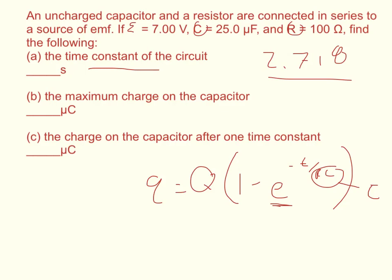100 times 25 times 10 to the negative sixth is equal to 0.0025, and the units on the time constant are seconds.